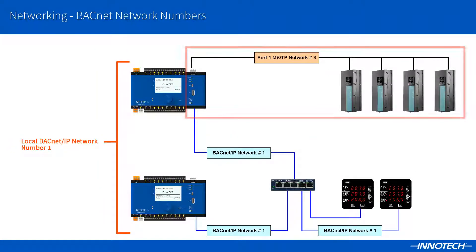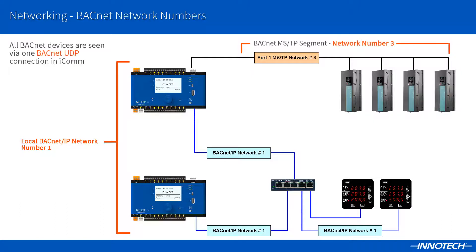If we connect an MSTP network to the Omni controller, we essentially have created a new BACnet segment, which requires a unique network number to be set. When the port is activated as MSTP, the network number defaults to 3. This is due to the fact that numbers 1 and 2 are already in use for the local and public networks.